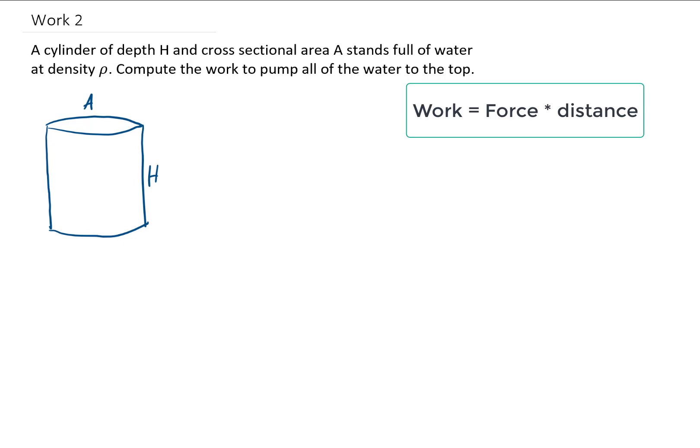Alright, so we have a cylinder of depth H with a cross-sectional area of A, it's full of water, and the water density is rho.